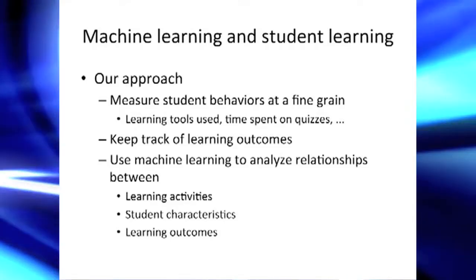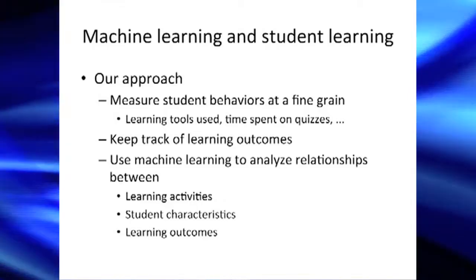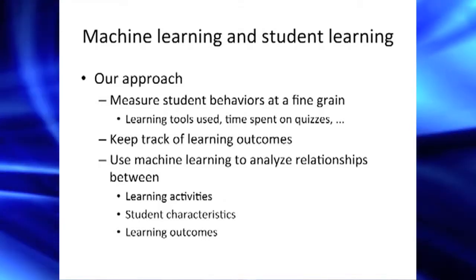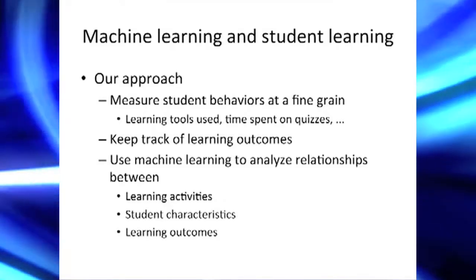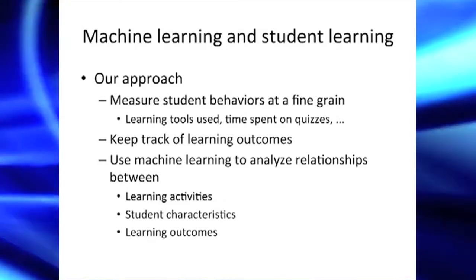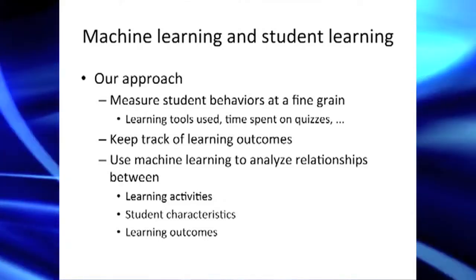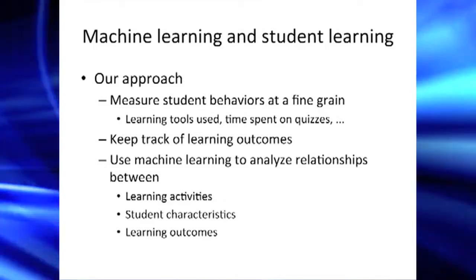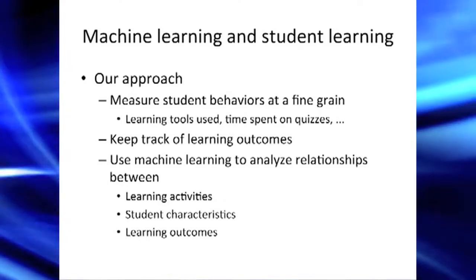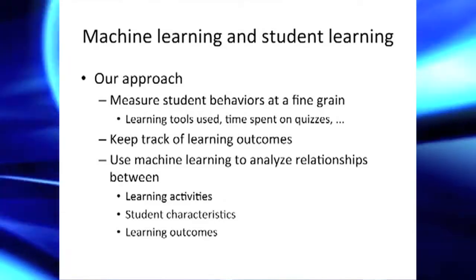So now let's put these two things together. On one hand we have students with learning behaviors that we're trying to understand and trying to know how we can use technology to support. On the other hand we have machine learning algorithms that are good at figuring out patterns within data. Our approach is to put these two together through three steps: first, measuring student behaviors at a fairly fine grain — for example, how much time they spend on online quizzes, when they go to the web to access learning information, and in detail how they are using our technology tools.